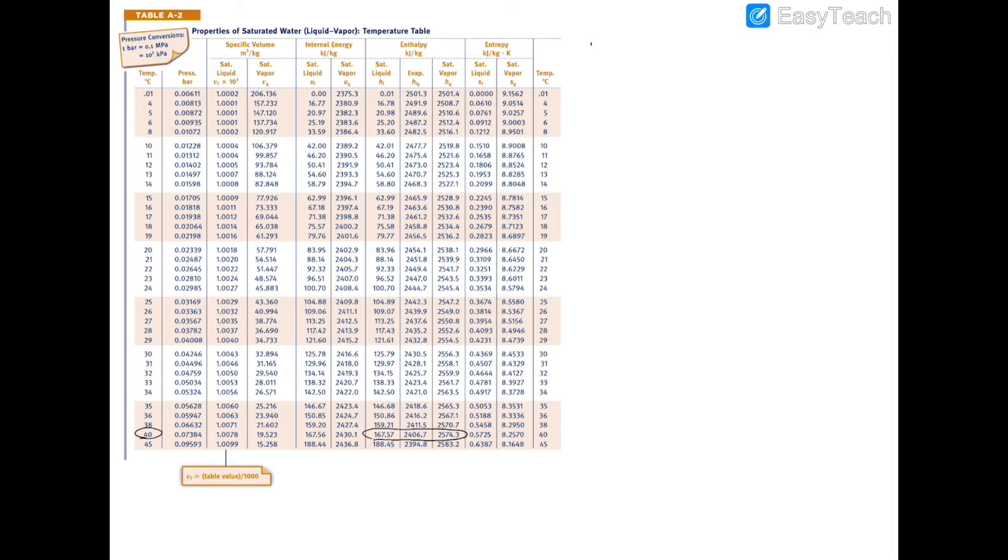To find h2, we're going to use the relation hf plus x times hfg, which is basically going to be h2 equals 167.57 plus 0.83 times the difference, which is actually given to us. It would just be this number minus this number, which is given to us right over here, which is 2406.7 kilojoules per kilogram.